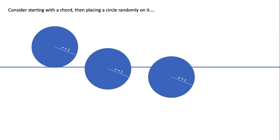So instead of starting with a circle and placing the chord on it, I said start with the chord and then randomly place the circle on it. Effectively, it's the same thing. They've got to intersect each other.